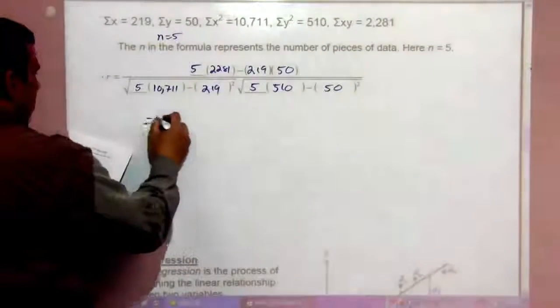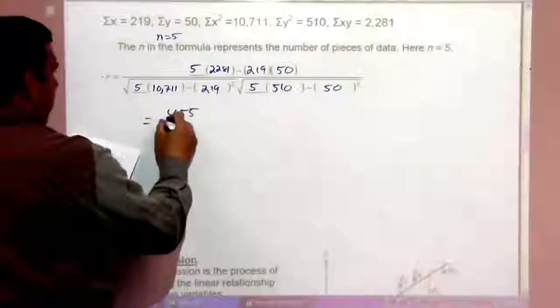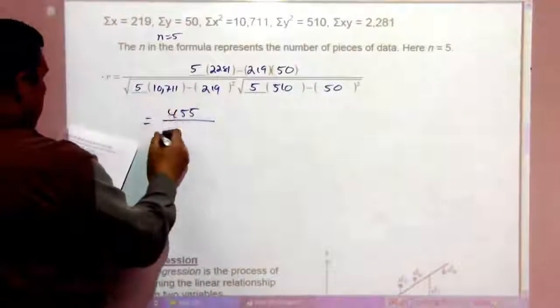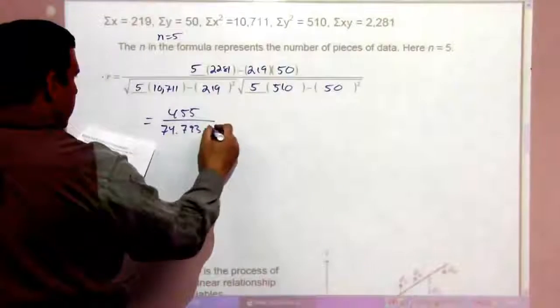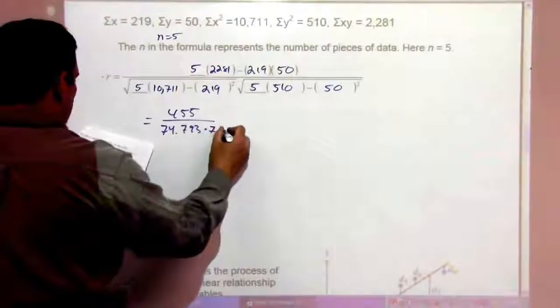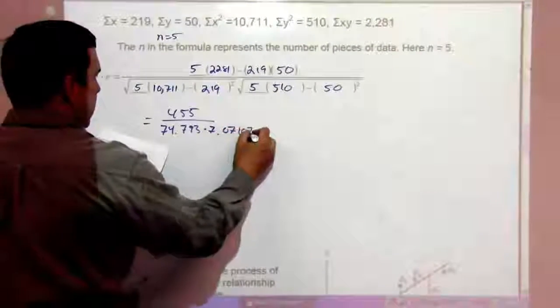So, this is going to give us, in the numerator, 455 over, from this expression, 74.793 times, from this expression, 7.07107.